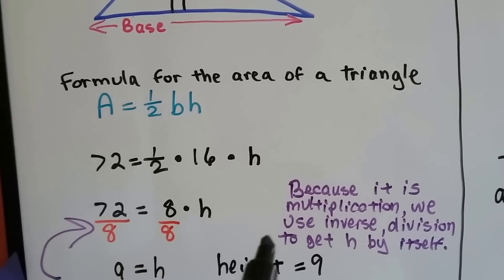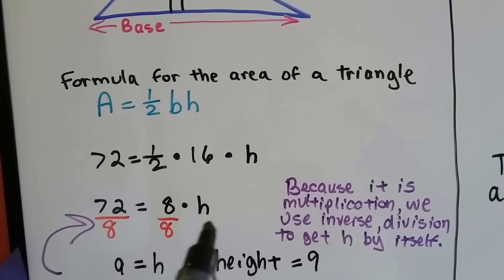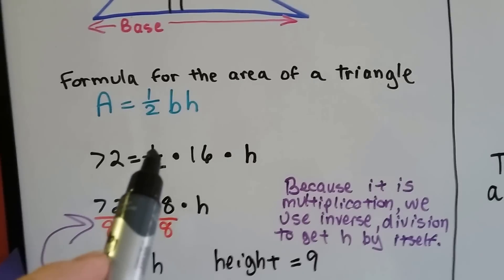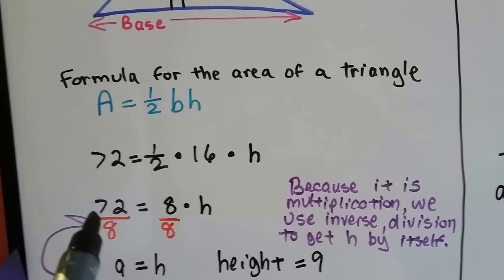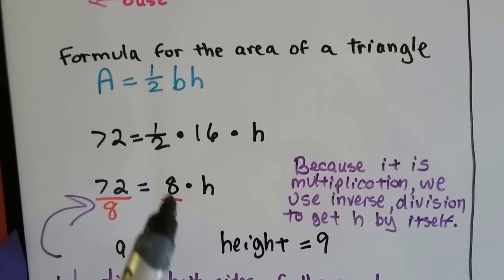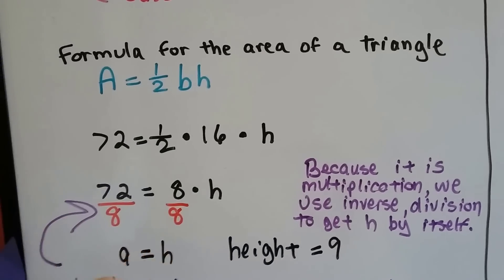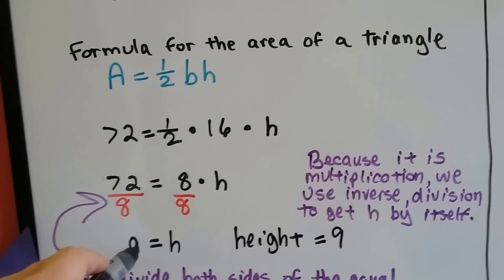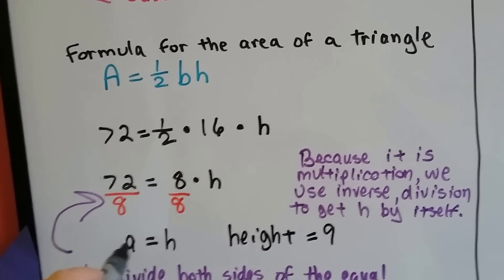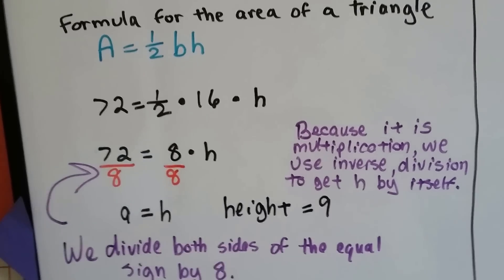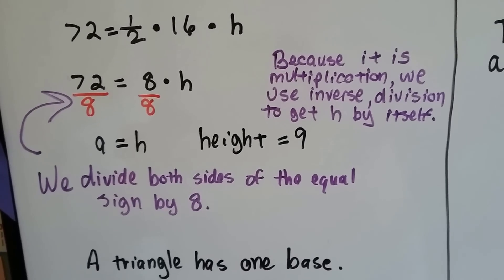Because this is multiplication, the inverse is division. So to get h by itself, we do half of 16, which is 8, and then we divide each side by 8. That will get rid of the 8, and 72 divided by 8 is 9, which gets h by itself. The height is 9. We just divide both sides of the equal sign by 8.